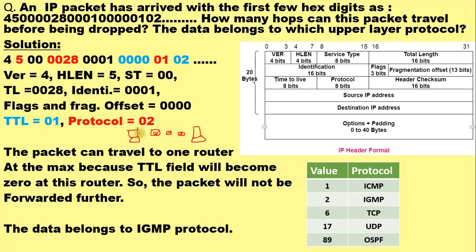The packet generated at the source will have the TTL field set to, say, 4. At the first router, TTL is decremented by 1. At the second router, TTL is decremented by 1 again, becoming 2. At the third router, TTL becomes 1. At the destination, the TTL field value becomes 0. So when a packet is transmitted, TTL is set at the source and becomes 0 upon reaching the appropriate destination.